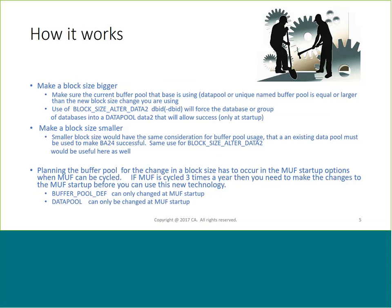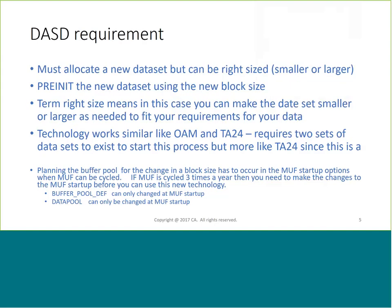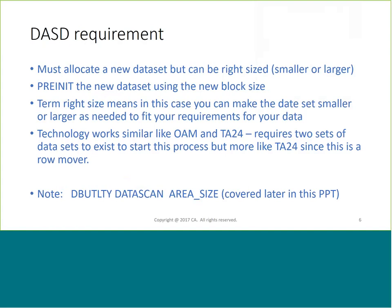Making a block size smaller doesn't tend to have a problem because you already have a bigger block size - it's going down in size, so it's not a problem. There are two startup options: the buffer pool depth and the buffer content pool. For example, if you're at 18K and want to go to 27K half-track, you'd have to find a half-track buffer content pool or have data pool set to half-track. When you allocate a new data set you right-size it, which is a new concept for this facility, and you do a pre-init. We use two sets of data sets - the existing data sets hold the current repository, and the new data set will hold the data as it's moved. We also have a new facility called DBUTILITY data scan size area, which tells you what block size and what kind of allocations you can use to hold the data set as it currently exists.